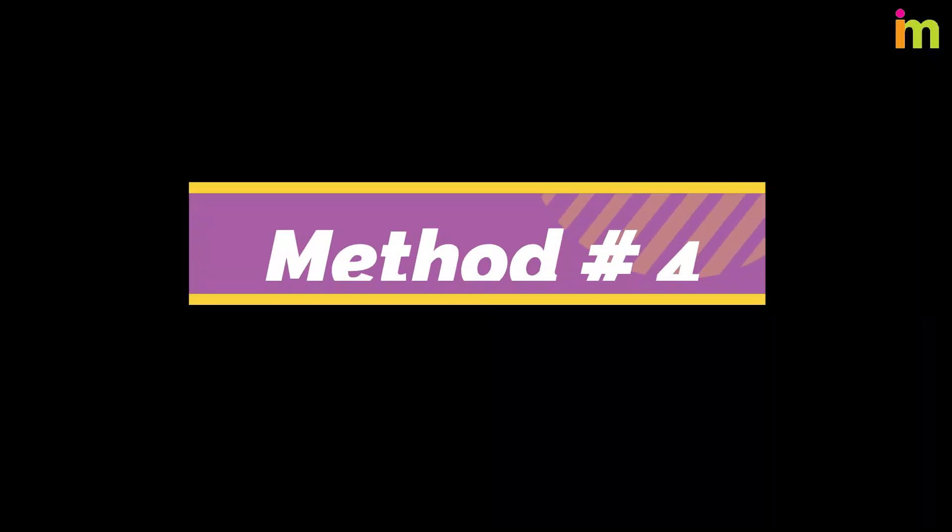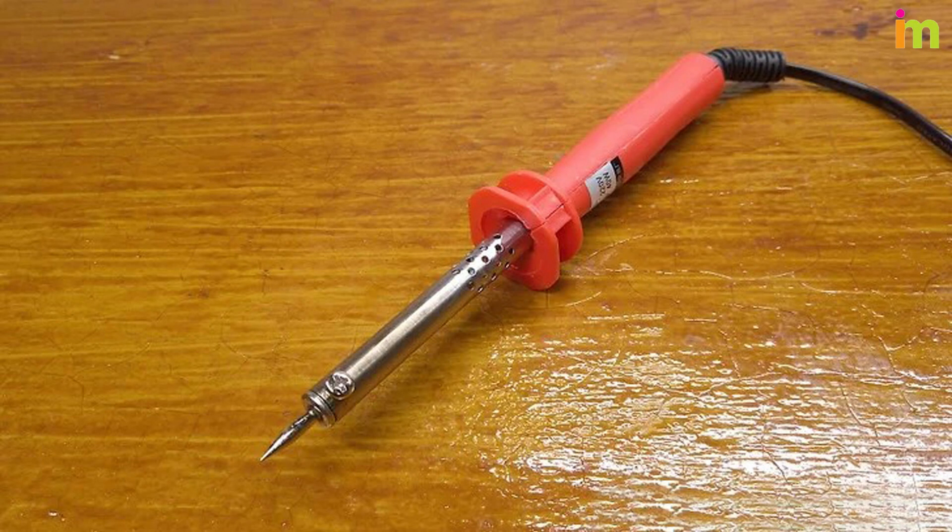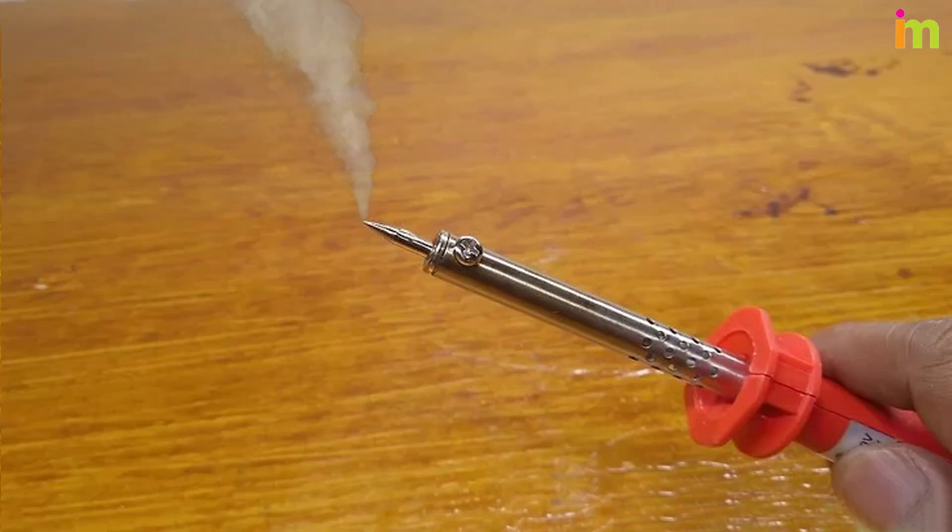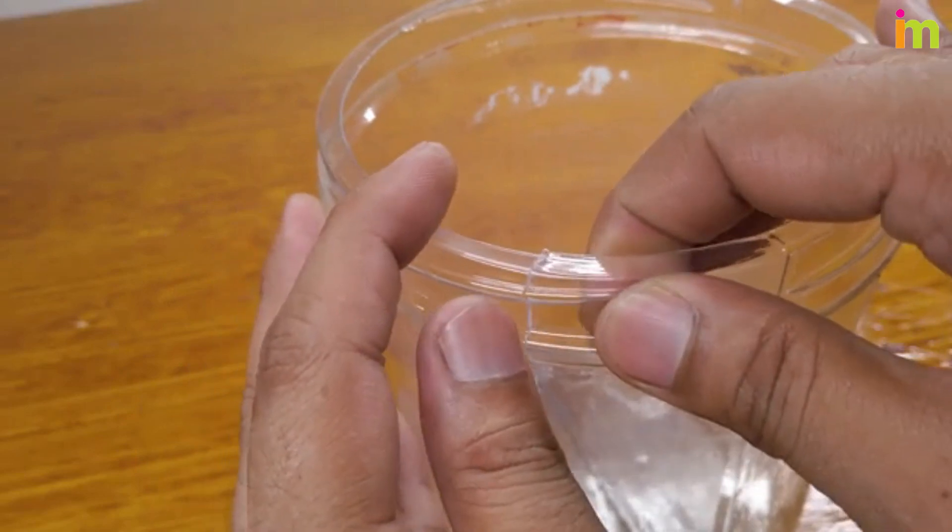Method Number 4: Welding the Plastic. Use a soldering iron to fix larger cracks in plastic. Let the soldering iron heat up. Connect and hold the crack together.